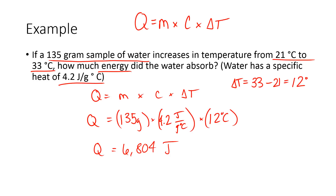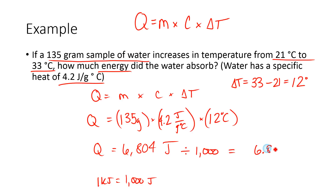A lot of times our energy values we get here are pretty big. So sometimes we can take these joule numbers and convert them into kilojoules. A kilojoule is a thousand joules. So to convert something into kilojoules, we would just divide it by a thousand. So this would be 6.804 kilojoules. Either way would be fine in this case, because we didn't specify whether you have to stay in joules or kilojoules.